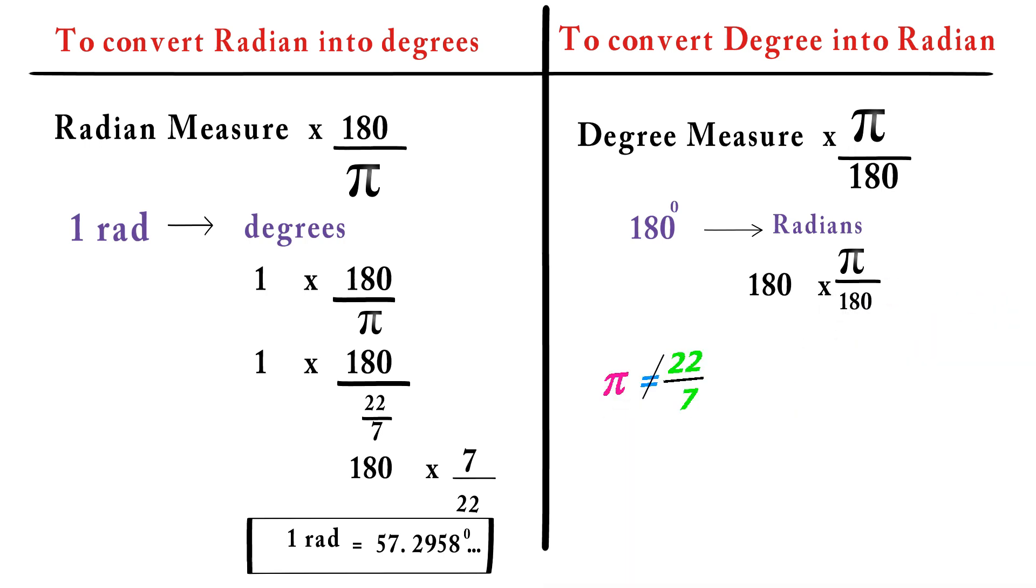But here, we don't replace π by 22/7, because here we want the answer in π terms. Always remember, whenever we are converting into radians, the value of π is never 22/7.